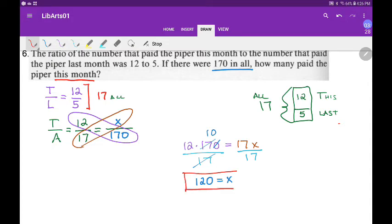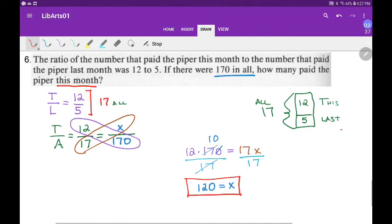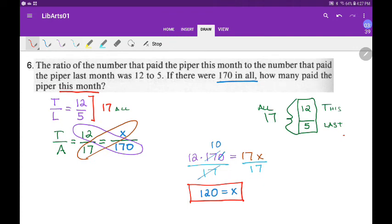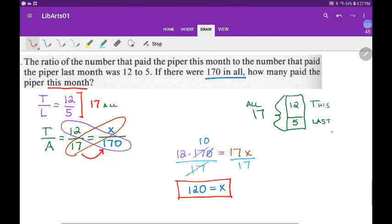And so that must be how many there really are this month. Not in my little sample. But in my big population, it's 120. So, you know, what I was talking about before is that it's 17 times 10 to make 170.